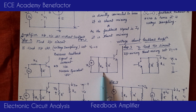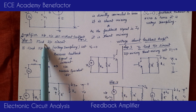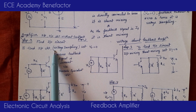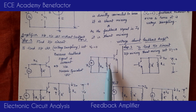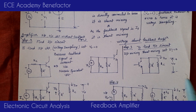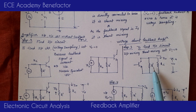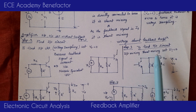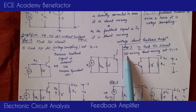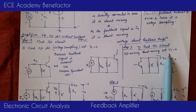So to draw the input circuit we saw the sampling — voltage sampling — and made V0 zero, connecting R' to the input side. To draw the output circuit, we need to see the mixing. Mixing is done at the input side, and here it is shunt mixing. For shunt mixing, we set Vi as zero — that is, set the input voltage to zero.